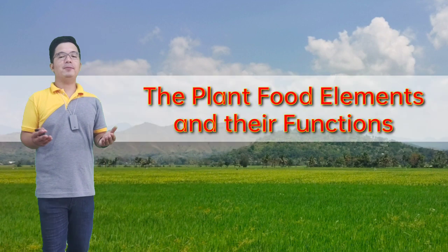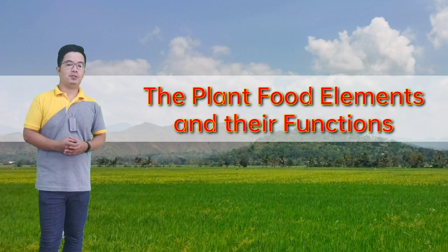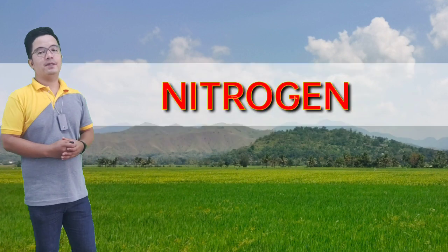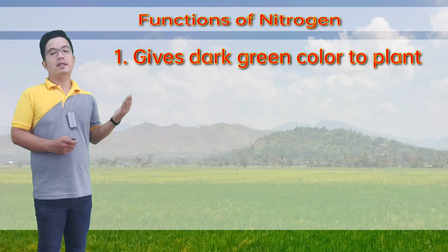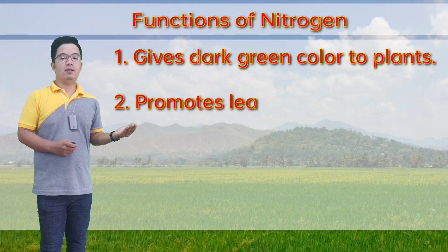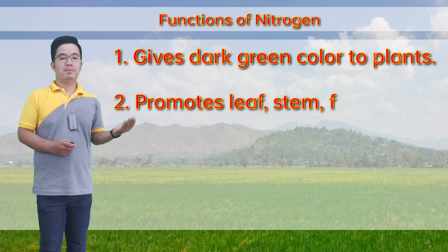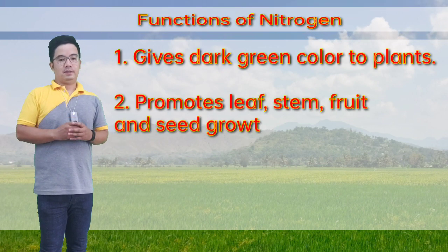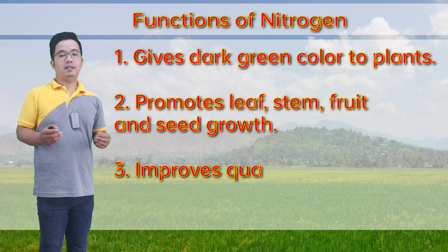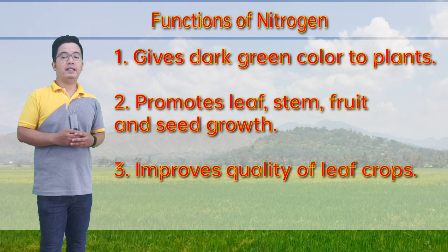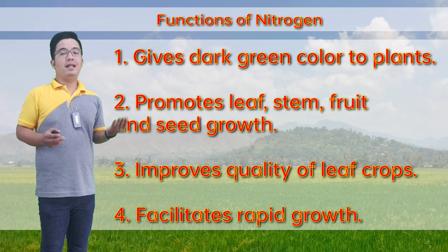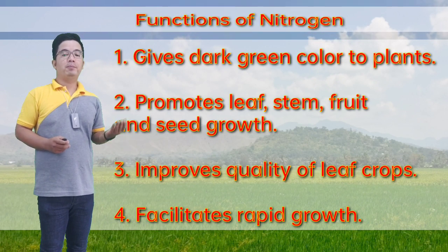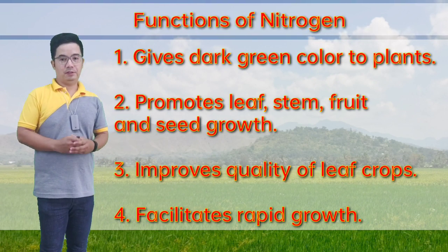Let's proceed with the plant food elements and their functions. First, we have nitrogen. Functions of nitrogen: first, it lends dark green color to plants — nitrogen is responsible for the dark green color of plants. It also promotes leaf, stem, fruit, and seed growth.